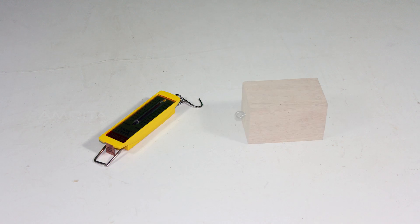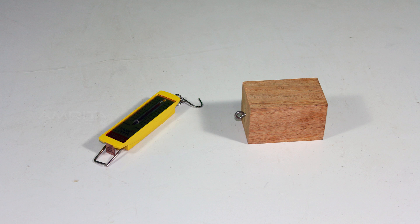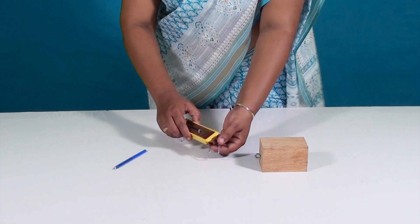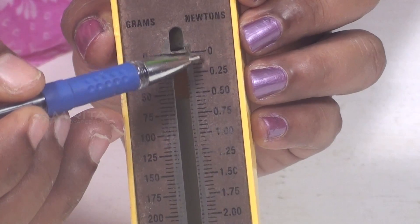Procedure: First, arrange a block of wood and a spring balance on a table. Take the spring balance and note the least count of the spring balance.